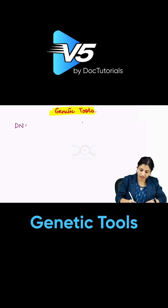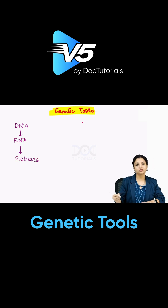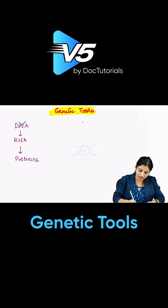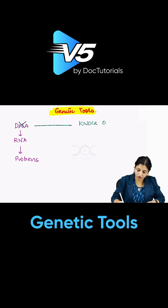Normally, DNA gives rise to RNA, and RNA gives rise to proteins. Now there are two things you can do. Either you can directly cut the DNA itself — this is called knockout technology.